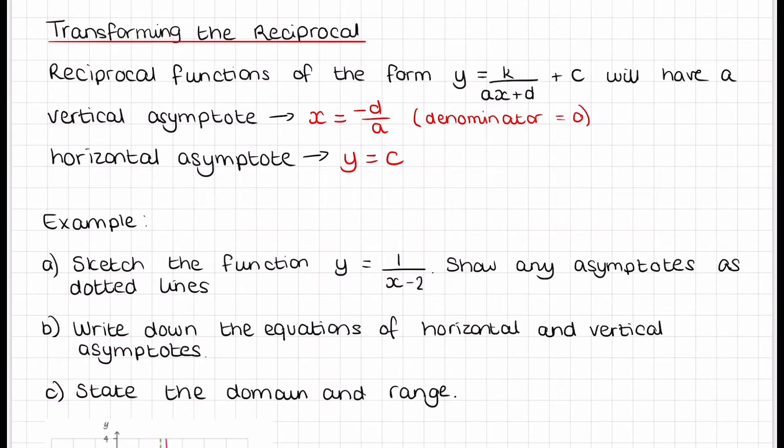Now we're going to look at transforming the reciprocal. A reciprocal function of the form y equals k over ax plus d plus c will have a vertical asymptote at x equals negative d on a, which is basically when the denominator equals 0. It will have a horizontal asymptote at y equals c.